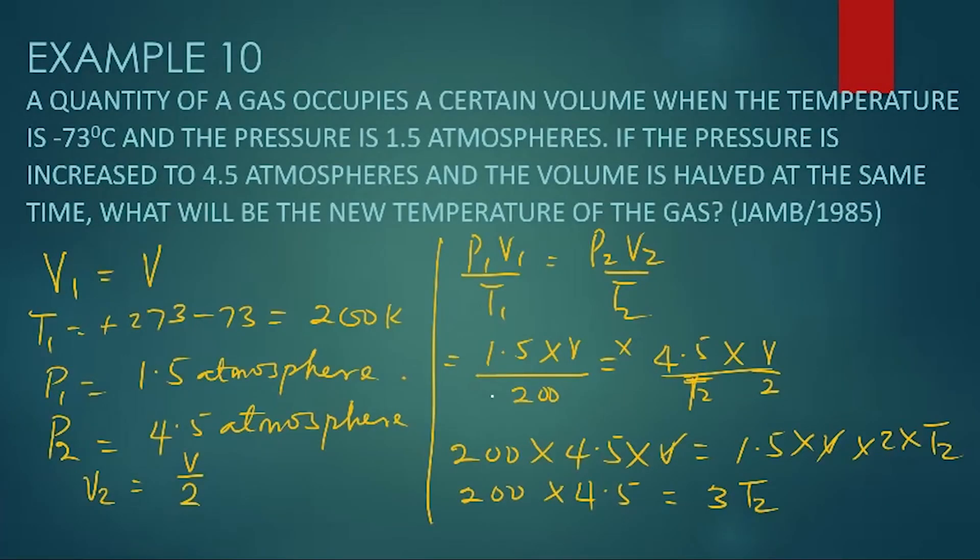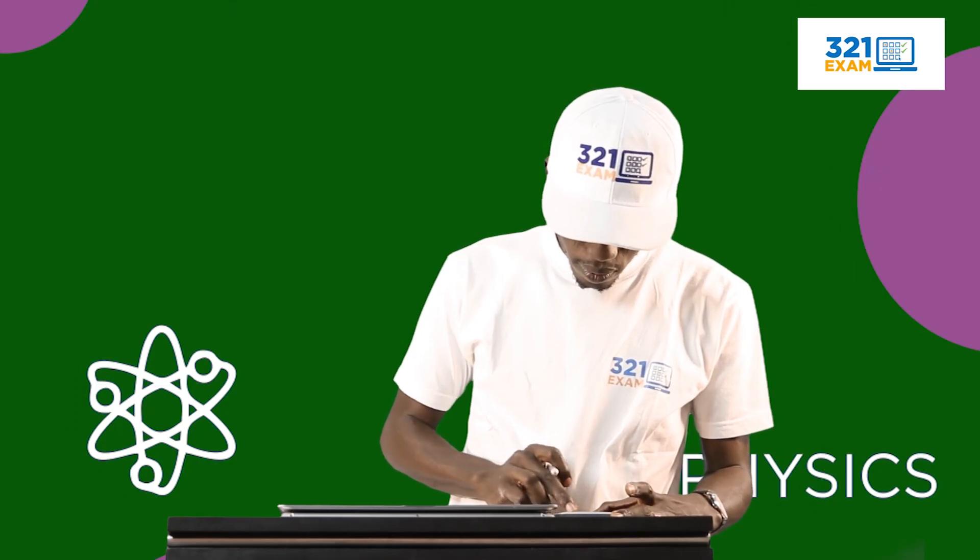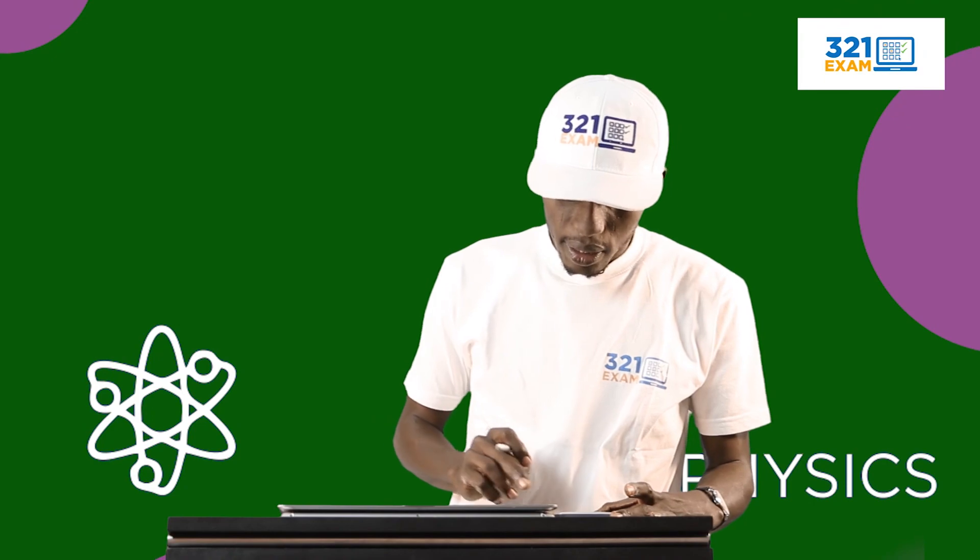So that T2 will now be equal to 200 times 4.5 divided by 3. 3 here will give you 1.5. Now 200 times 1.5 will now give you 300 Kelvin.